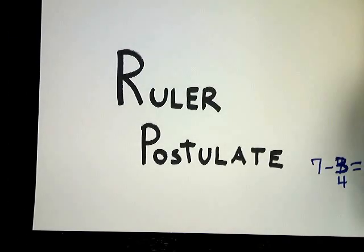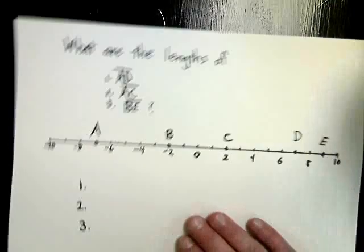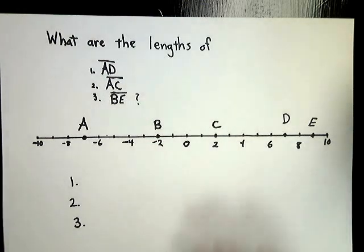So let's look at a couple to see the types of problems that you'll end up with. This is what they really look like. What are the lengths of AD, AC, and BE? It's nice to go ahead and make sure that you mark out the values, and that'll make your life way easier.